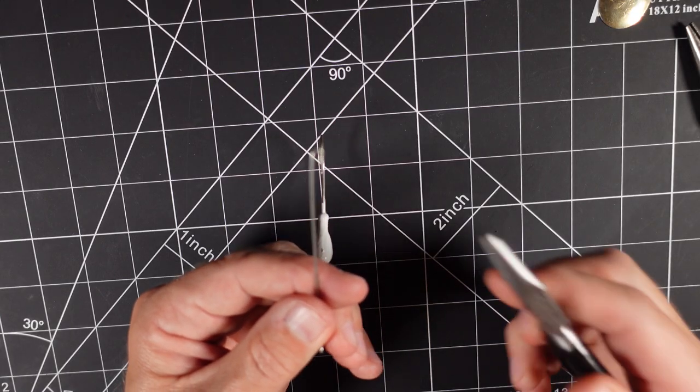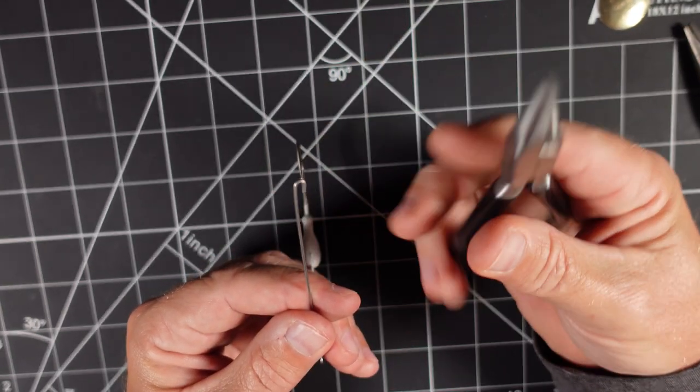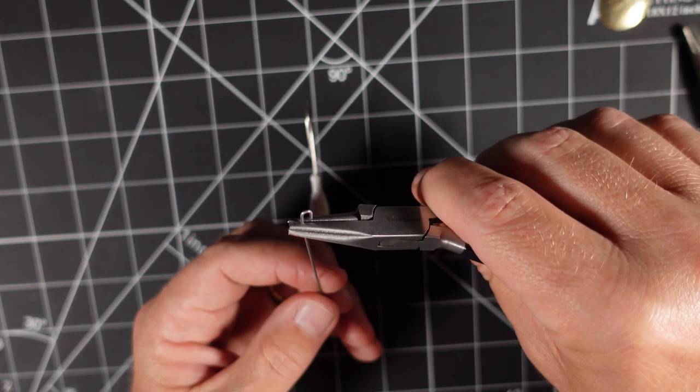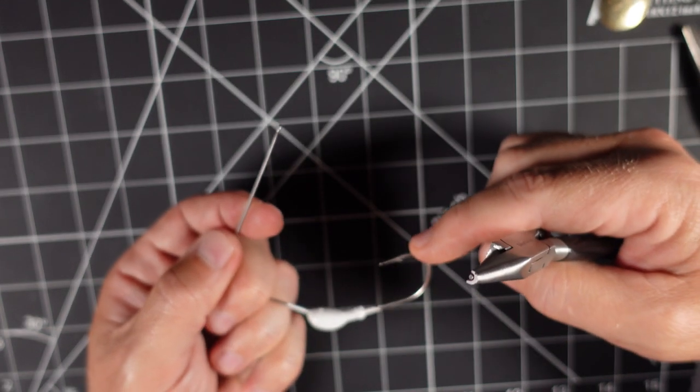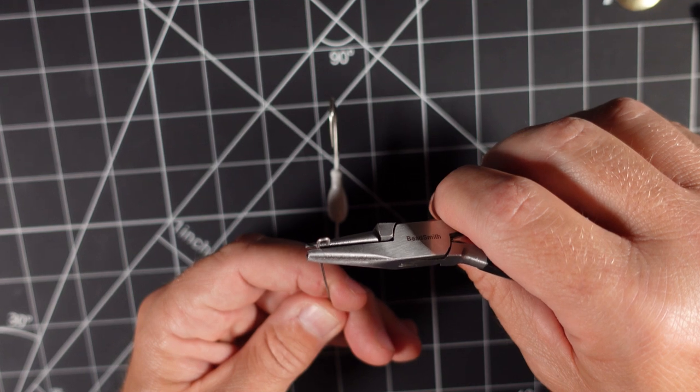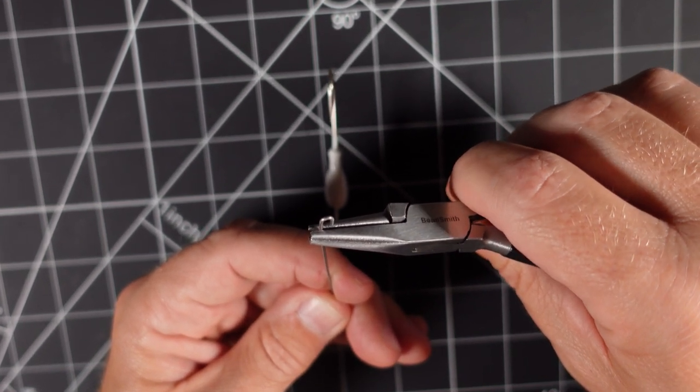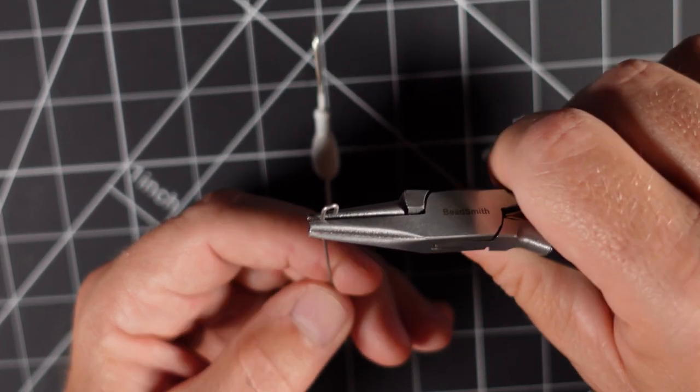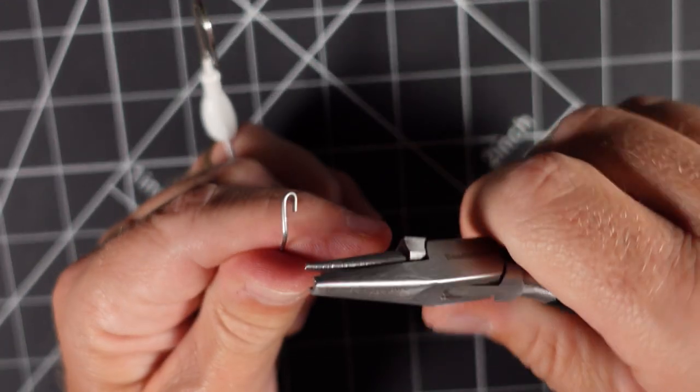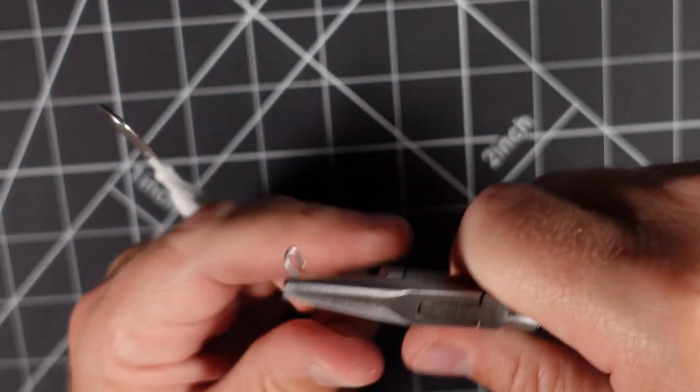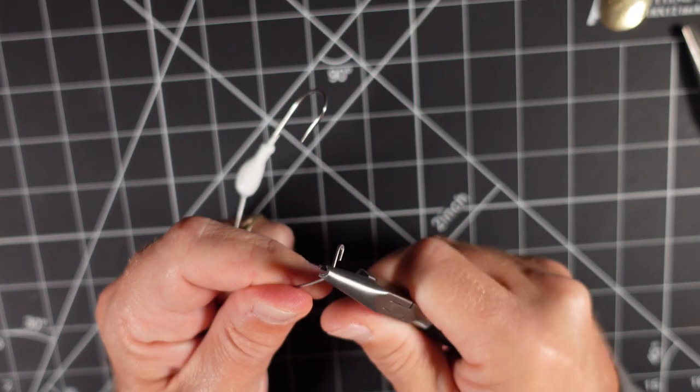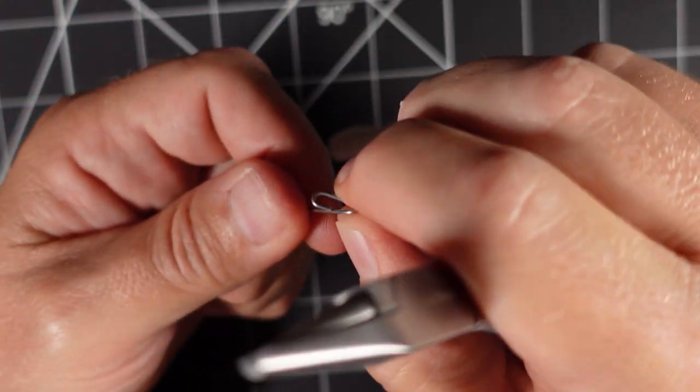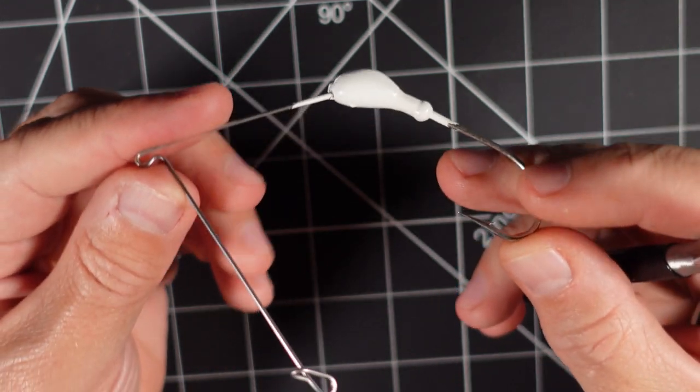So once we have that loop made we're going to take our round nose pliers again and we're going to make another loop but this time we're going to make that loop come down towards the hook. And we're going to grab this thing just in front of where the end of this is, and we're just going to bend that around like so, until we have something that looks kind of like this.